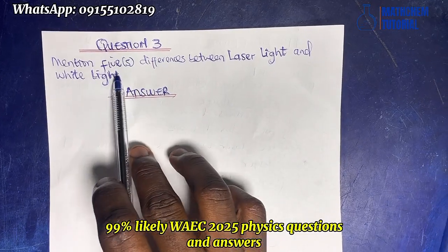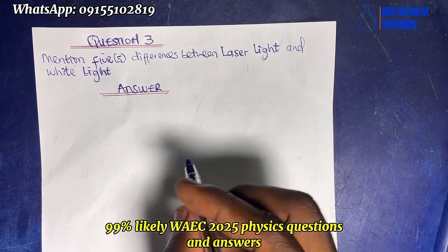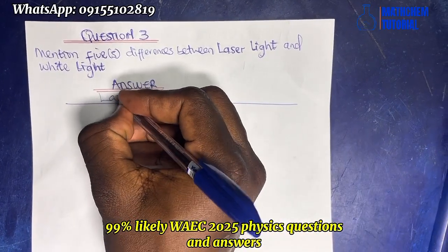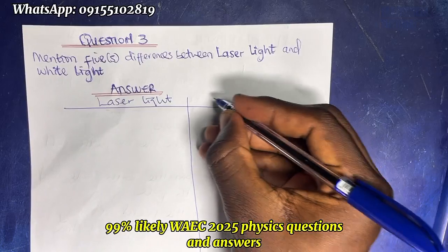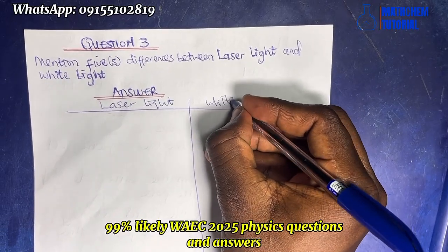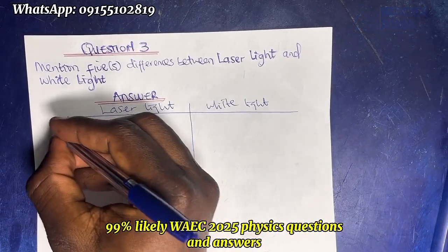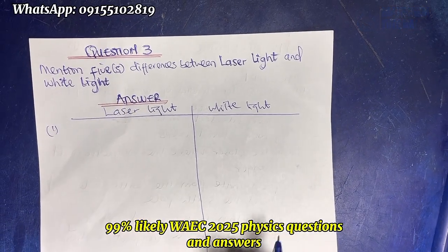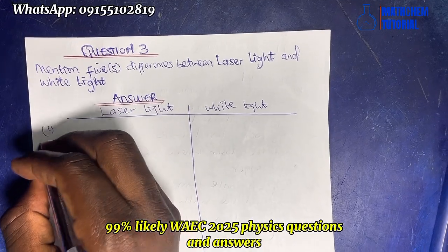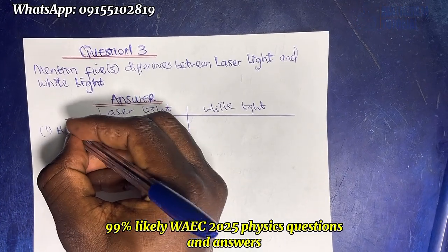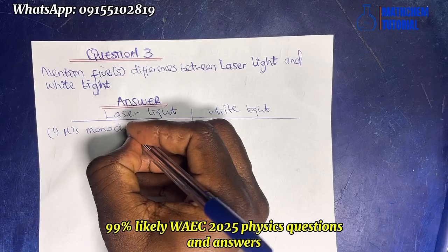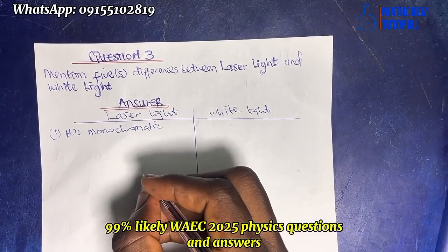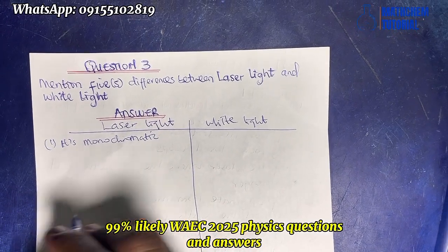Question three asks us to mention five differences between laser light and white light, so let's tabulate. For laser light, number one: laser light is monochromatic, meaning it has one wavelength.